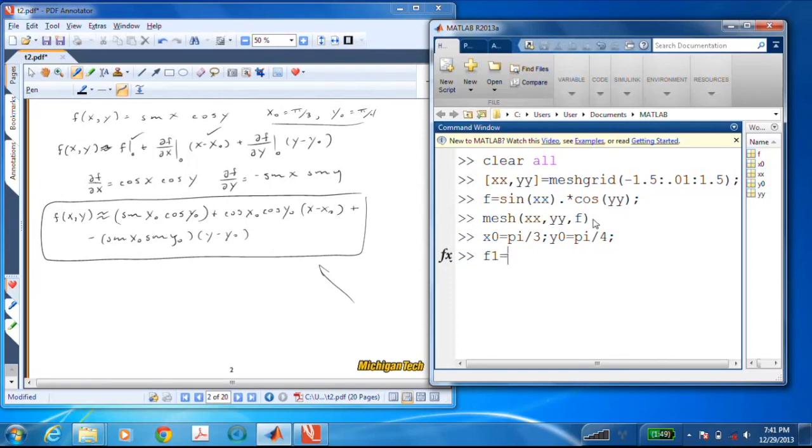And f1, that's my linear version, and I'll try to make it look just like it does in the page next door: sine x0 times cosine y0 plus cosine x0 times cosine y0 times (xx minus x0) minus sine x0 times sine y0 times (yy minus y0).